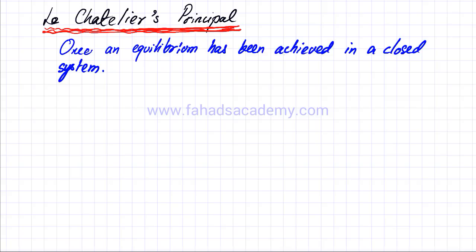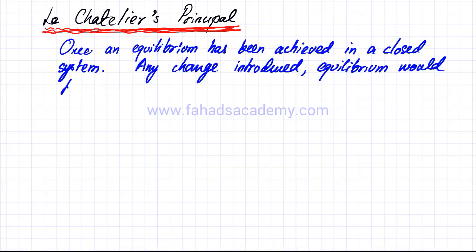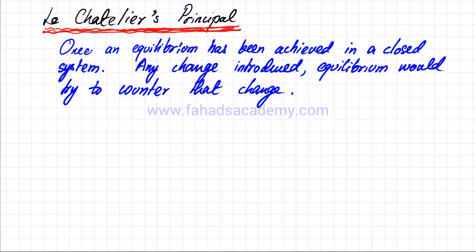So once an equilibrium has been achieved in a closed system, any change introduced — the equilibrium would try to counter that change. We're going to try and understand what is meant by this. In simple words, what that means is the following.